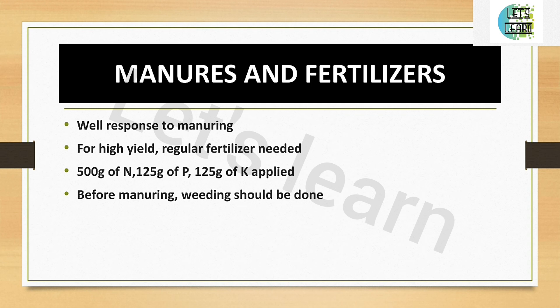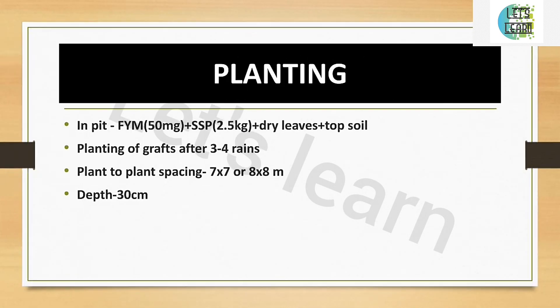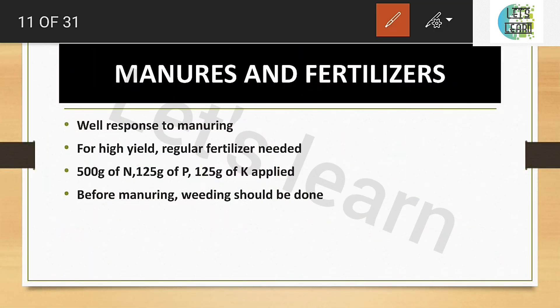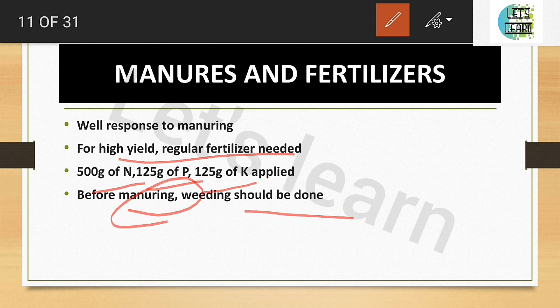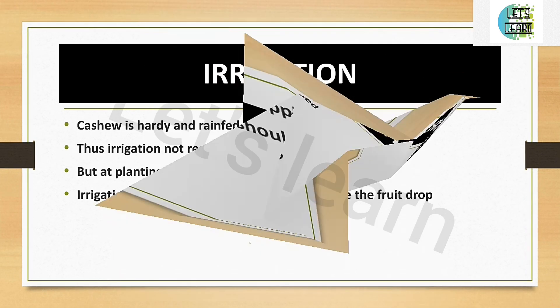Cashew well responds to manuring. For high yield, regular fertilizers are needed: 500 g of nitrogen, 125 g of phosphorus, and 125 g of potash can be applied. Before manuring, weeding should be done — this is common for most crops. Earthing up should also be done before applying manure.